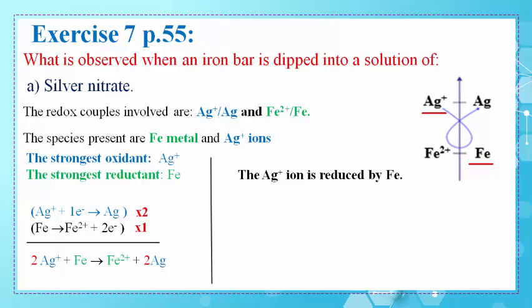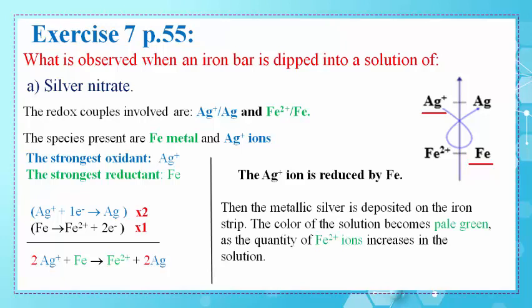Ag+ ion is reduced by Fe. Then the metallic silver is deposited on the iron strip — the Ag formed in this reaction deposits on the iron strip — and the color of the solution becomes pale green, since the quantity of Fe2+ ions increases in the solution.